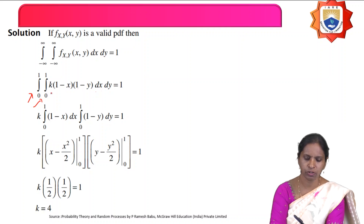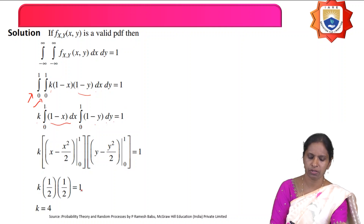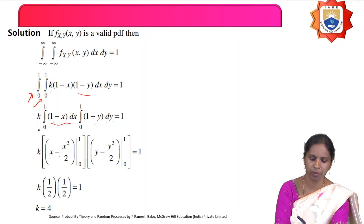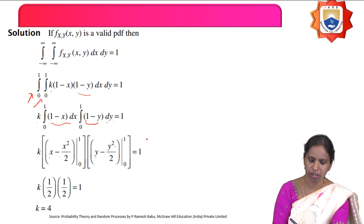Since k is a constant, bring it outside: k times the integral from 0 to 1 of (1−x) dx times the integral from 0 to 1 of (1−y) dy equals 1. The integration of (1−x) is x − x²/2 with limits 0 to 1, and similarly for y.